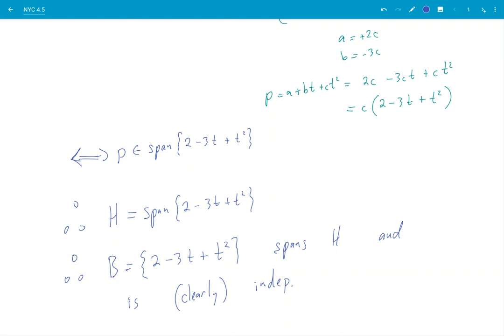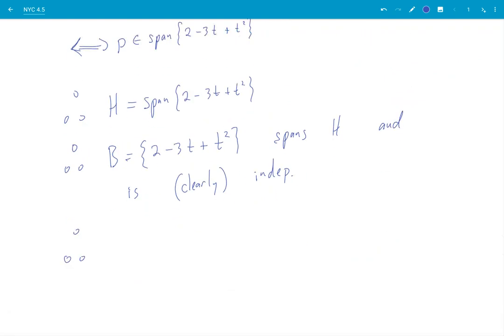So therefore, I'll call it B, this set of one polynomial spans H and is independent. Why do I know it's independent so clearly? Well, it's a set of a single non-zero vector. So therefore, B is a basis for H and therefore dimension of H. Well, I'm just counting the number of vectors in here. It's one.